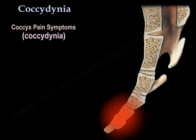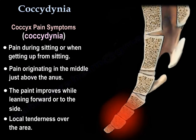Coccyx pain symptoms include pain during sitting or when getting up from sitting, pain originating in the middle just above the anus, pain that improves while leaning forward or to the side, and local tenderness over the area.